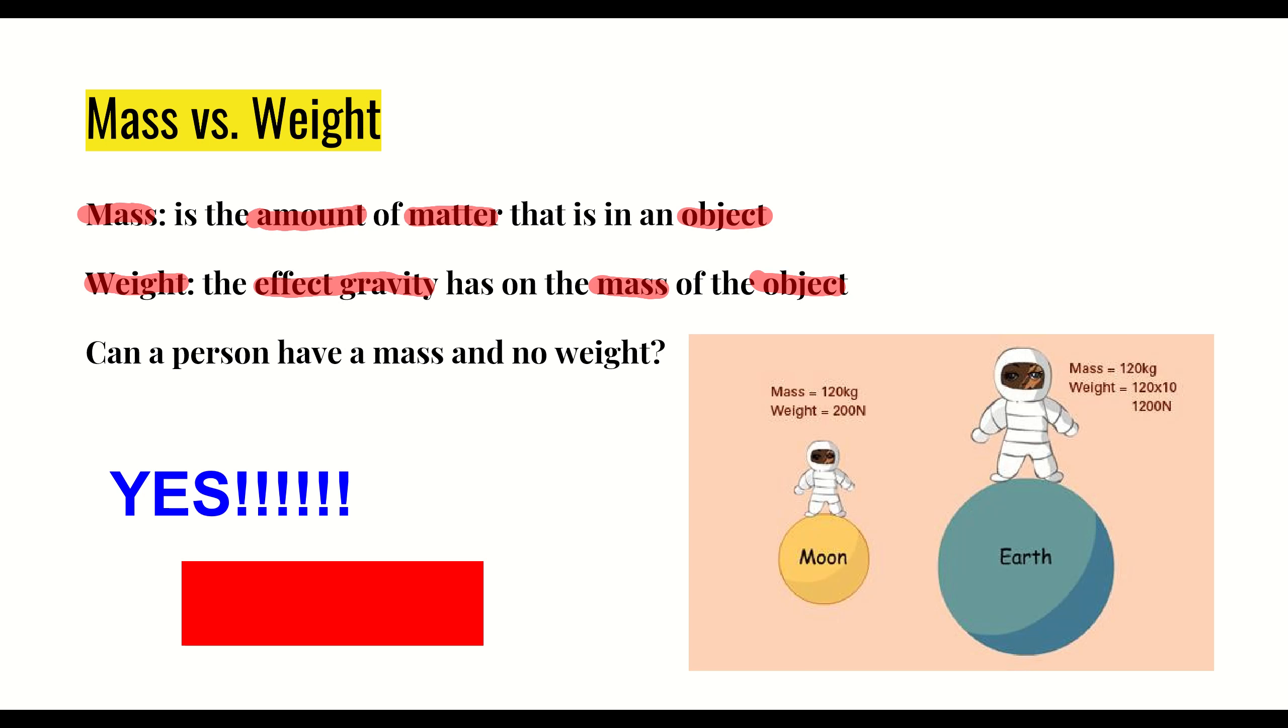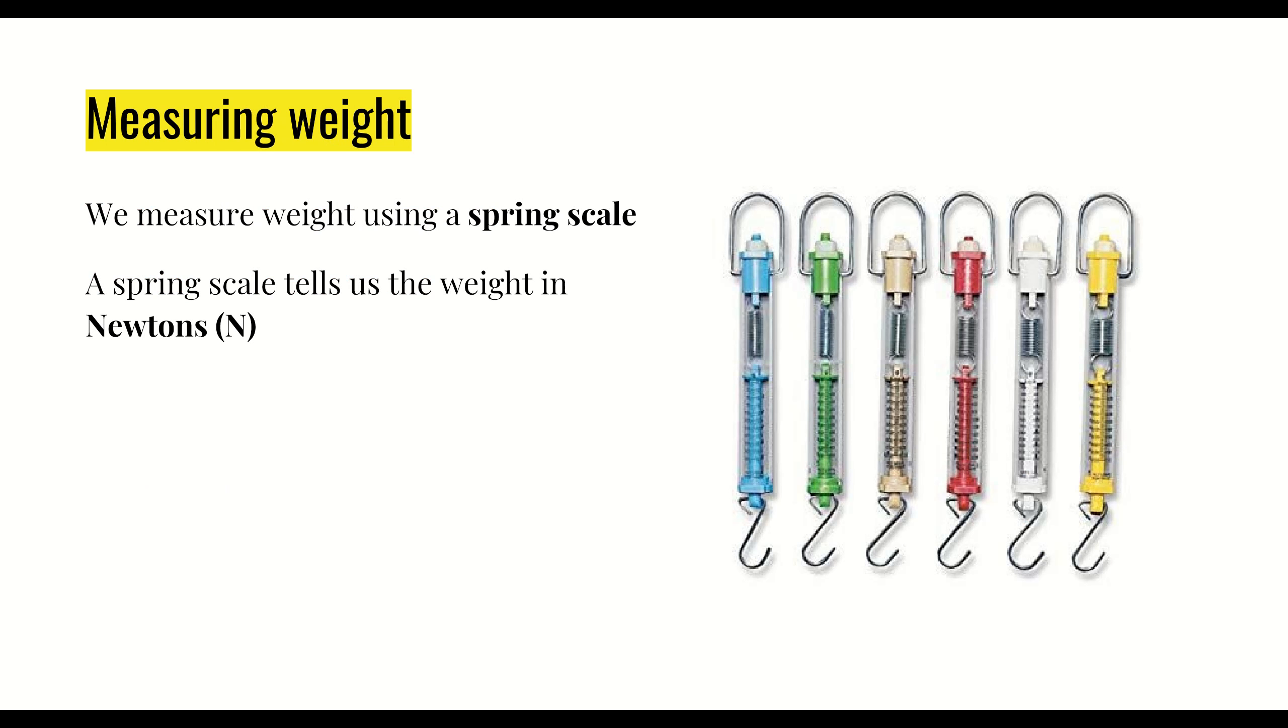Now this final piece: that's great, we know what weight is, we know how it's different than mass, but how do we measure it? How do we know? We measure weight using a tool called the spring scale. A spring scale tells us the weight in newtons. Now a couple things you want to be careful about: on our spring scales there's one side that's labeled newtons and one side that's labeled grams. You want to make sure you're using the side that's labeled newtons.